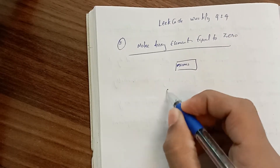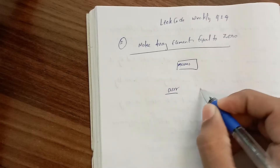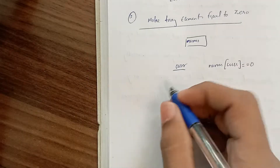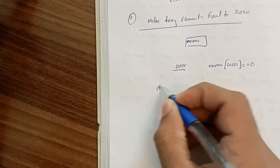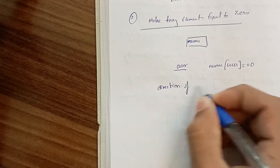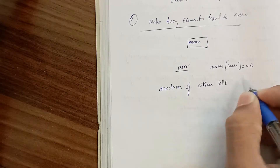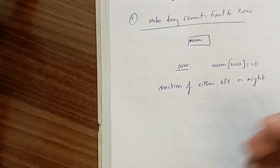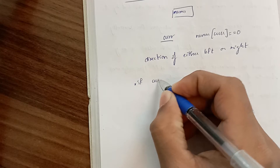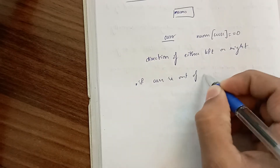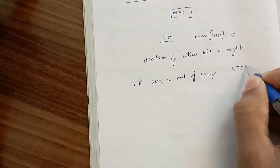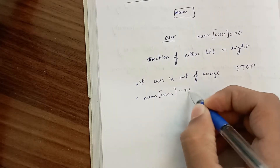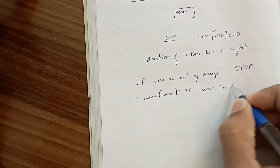We need to start by selecting a starting position 'current' such that nums[current] is equal to 0, and choose a direction to move, either left or right. Then we repeat the following process: if current is out of range, we stop. If nums[current] is equal to 0, move in the current direction.